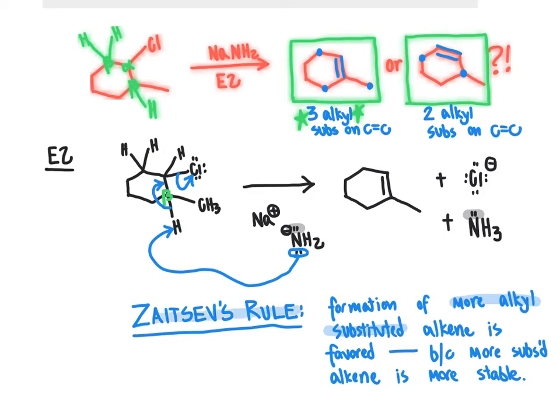Zaitsev's rule is a really important rule driven by the stability of alkenes, and it will allow us to reliably predict what constitutional isomer product is preferred by elimination reactions. We definitely want to be comfortable with its application. Note that we will also be applying Zaitsev's rule to E1 reactions as well, so you'll see it again.